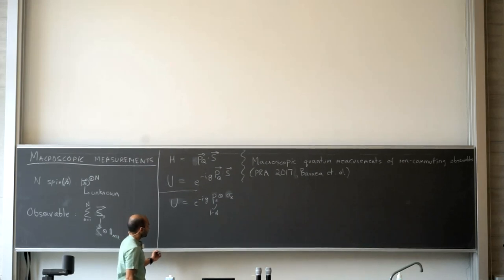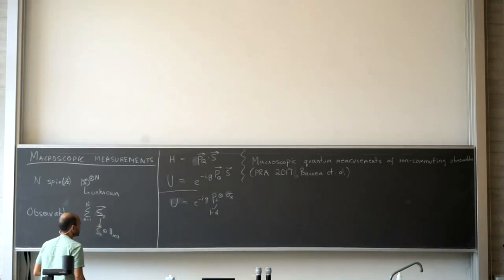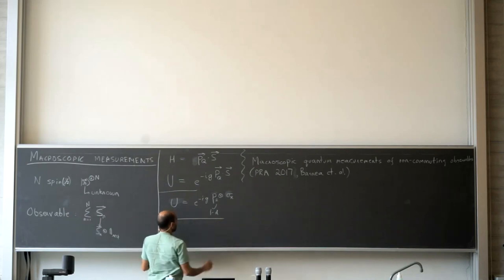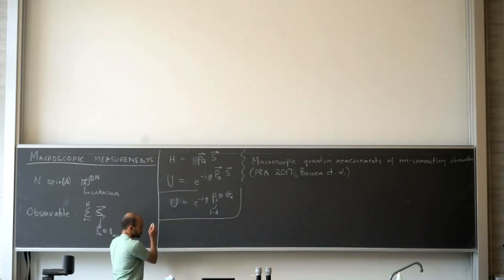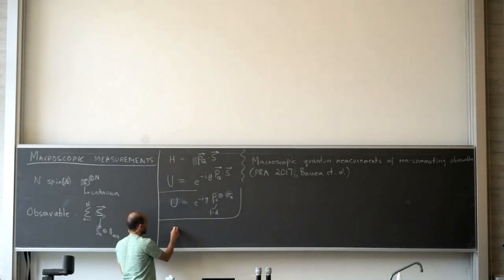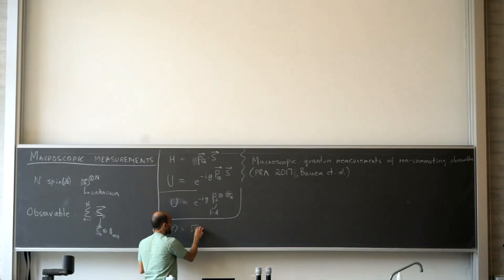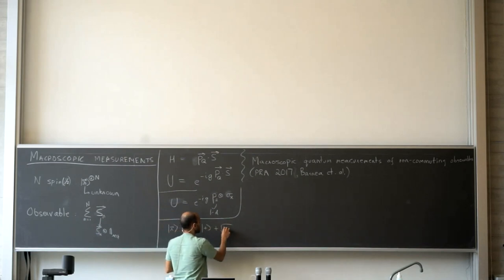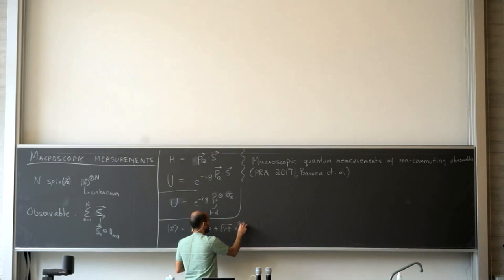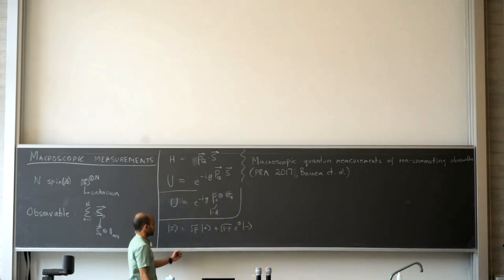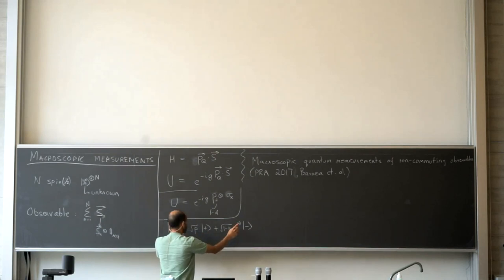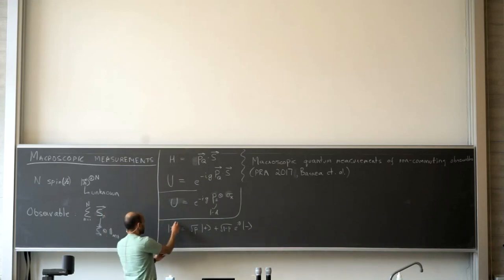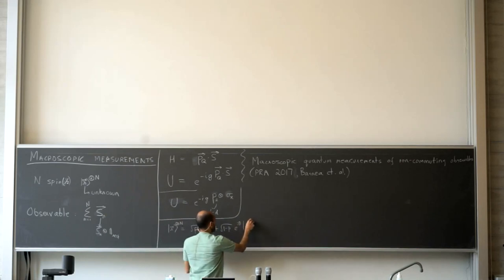Now I write down the state of one of the spins. The most general spin-half state can be written as |r⟩ = √p |+⟩ + √(1−p) e^{iθ} |−⟩, up to a global phase which won't matter. So |r⟩^⊗N is just this state tensored N times.